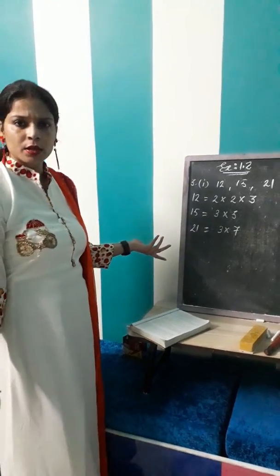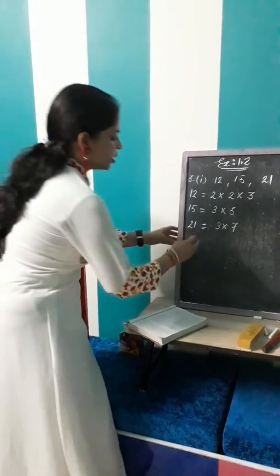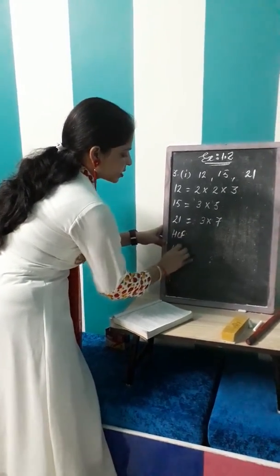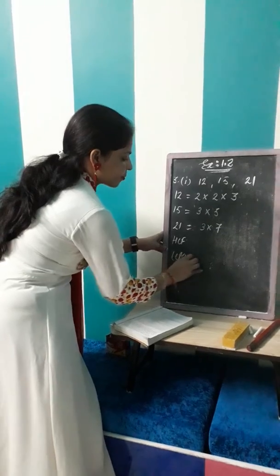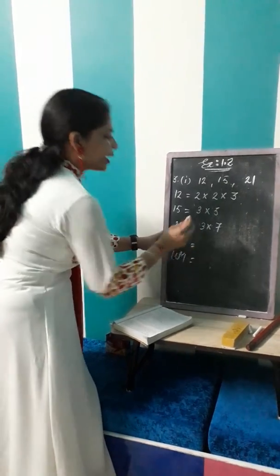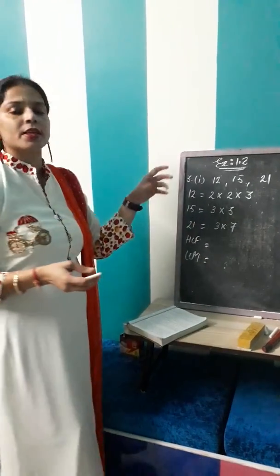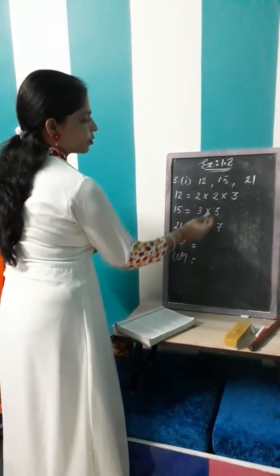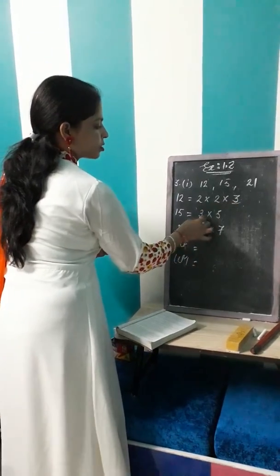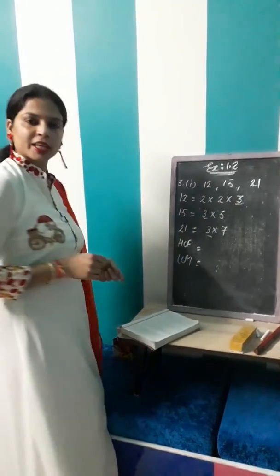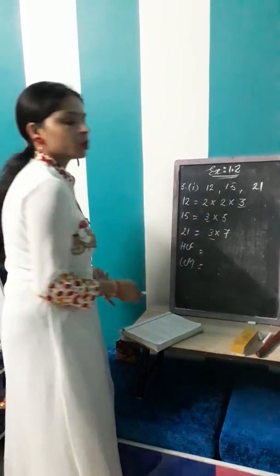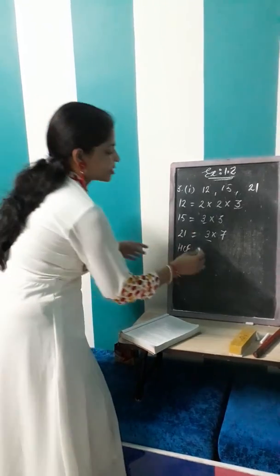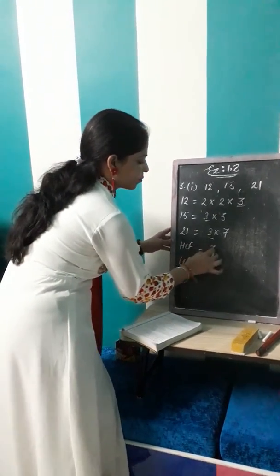Again, we are asked about the HCF and LCM. Clearly, HCF is the highest common factor. The term which is common in all three is 3. No other term is common, so HCF is 3.